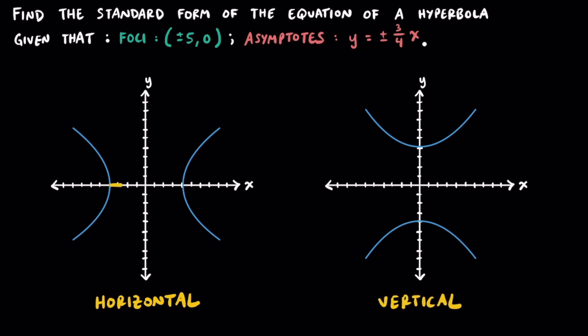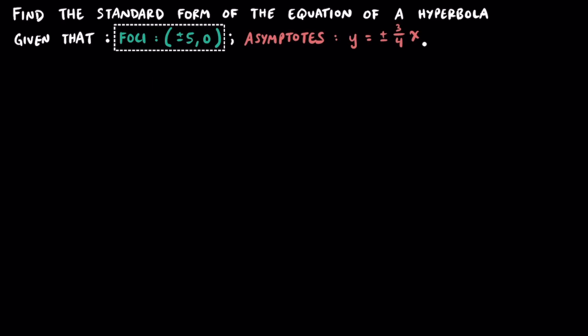Just a reminder, the transverse axis is going across from here to here, and the transverse axis for this one on the right is going up and down over here. Now, because we're told that our foci is plus or minus 5 comma 0, I strongly recommend plotting those points down so you can see where they lie. So one of the foci is going to be right over here at positive 5 comma 0, and the other one is going to be 5 to the left.